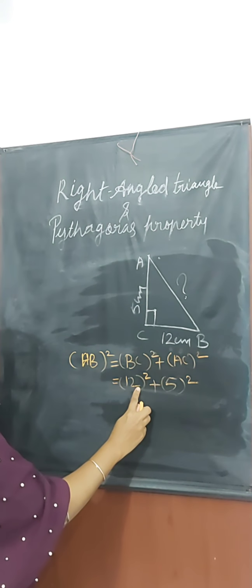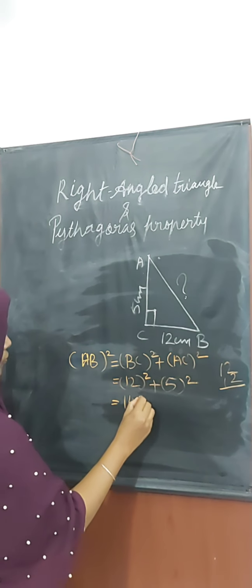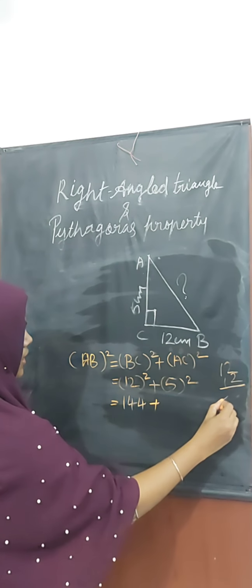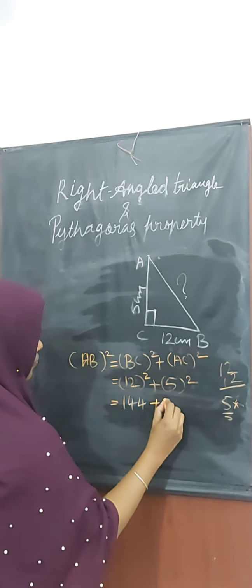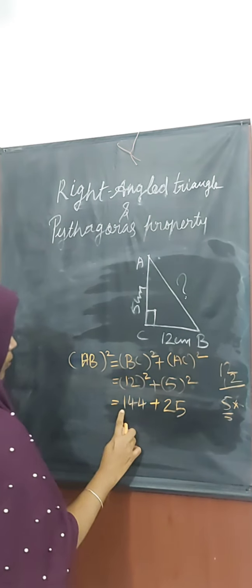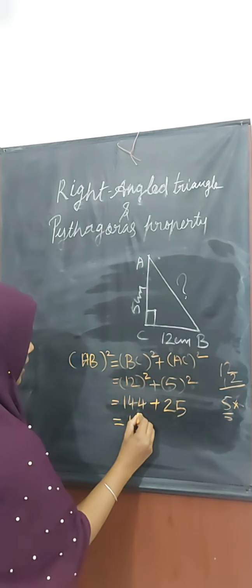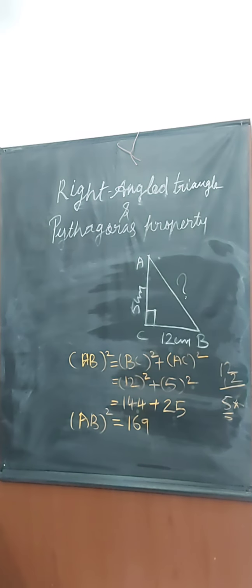12 square means 12 into 12, we get 144 plus 5 square. 5 square means 5 into 5, we get 25. 144 plus 25, we get 169. AB square equals 169.